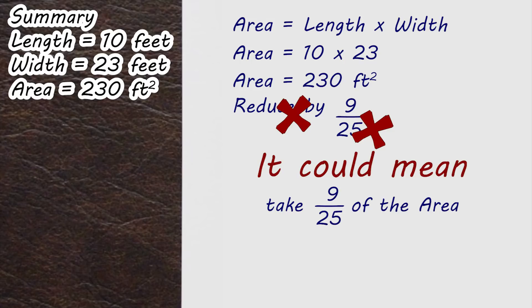It could mean that we want our final result to be 9 over 25 of the original size. It could mean that we want to take away 9 over 25 of the original size. Or if we're looking at it explicitly as it's written, it actually just wants us to take away 9 over 25 of a square foot, which is almost certainly wrong in this context.